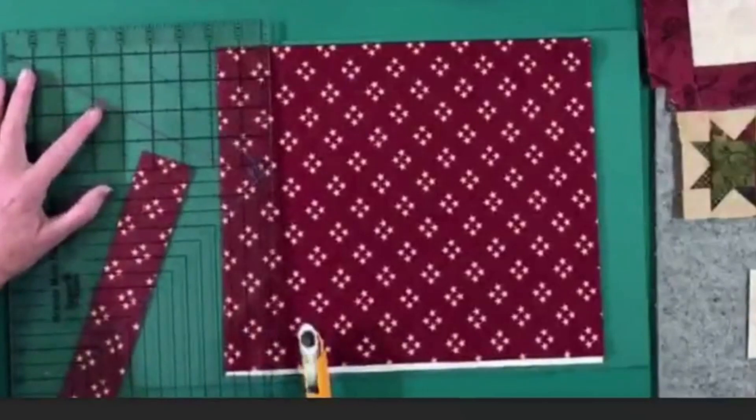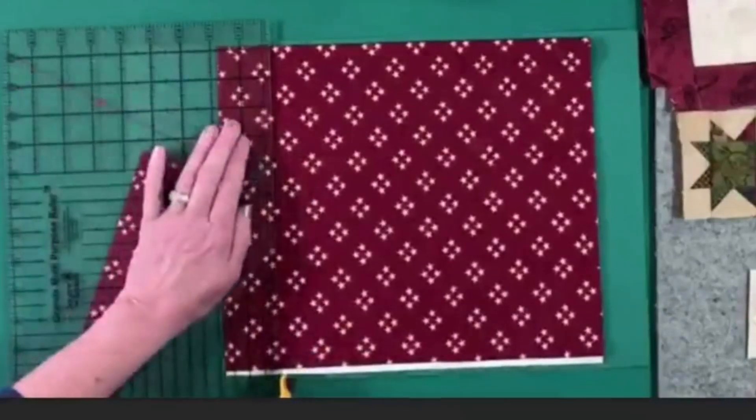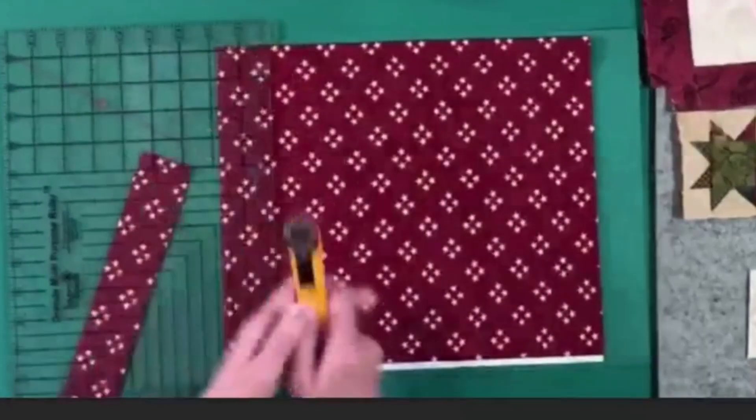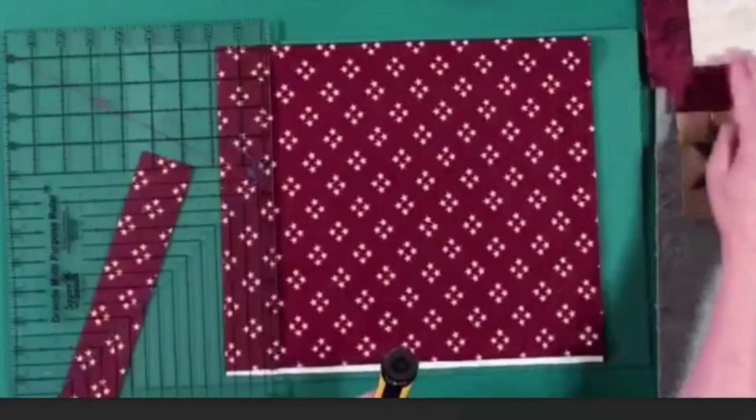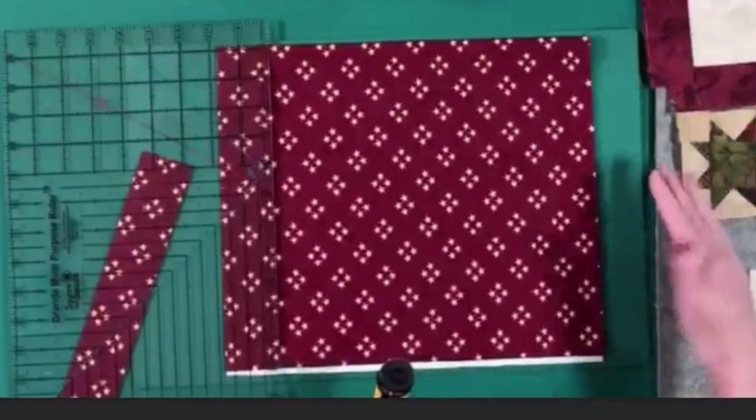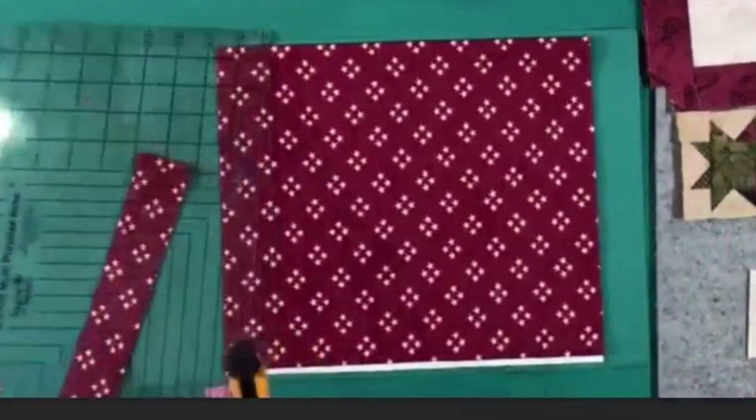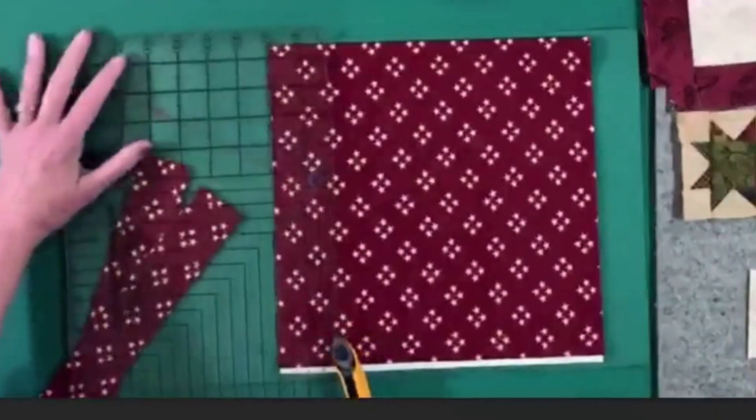Now, our center squares need to be as exact as possible, but our strips that we're going to sew around, they don't have to be perfect. We don't have to worry about them being exact because when we get these sewn on and then we use the square and square system to trim them up to get all of our shapes, we're going to trim off what we don't need. So, the main thing is making sure that they're wide enough.